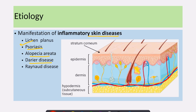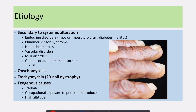Other than those mentioned causes, there are some other systemic causes that can cause koilonychia, which include endocrine disorders like hypothyroidism, hyperthyroidism, diabetes mellitus, Plummer-Vinson syndrome, secondary hemochromatosis, and many vascular diseases. Musculoskeletal disorders and autoimmune diseases like SLE also can cause koilonychia. Onychomycosis and twenty-nail dystrophy are also causes of koilonychia.